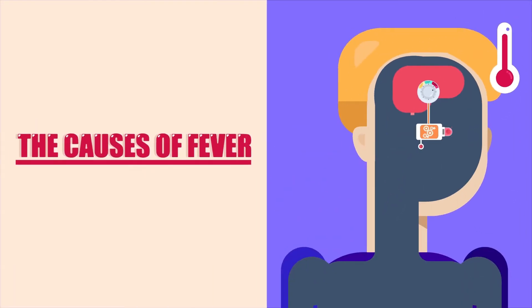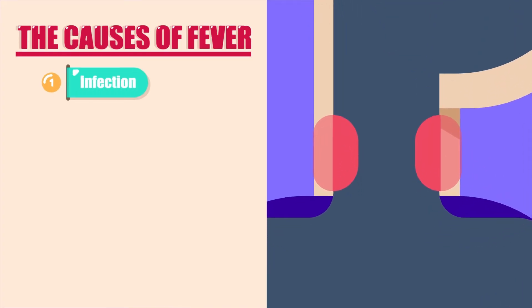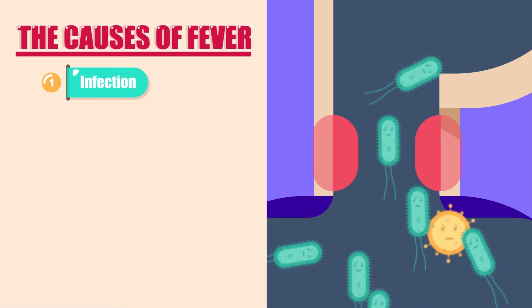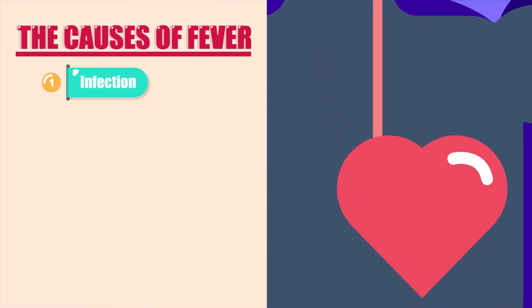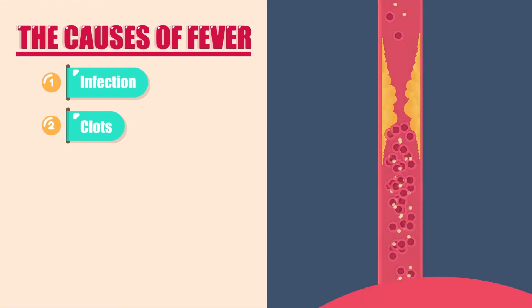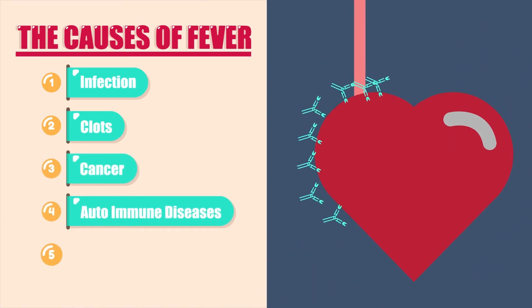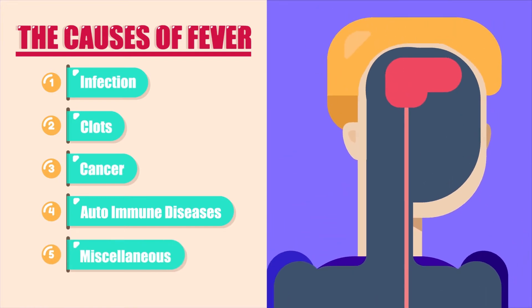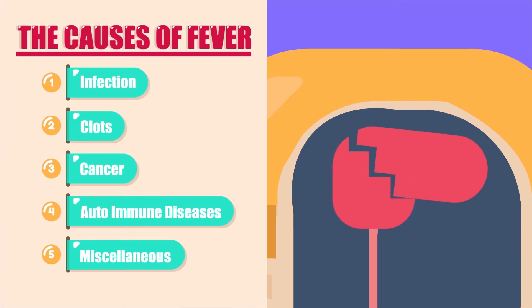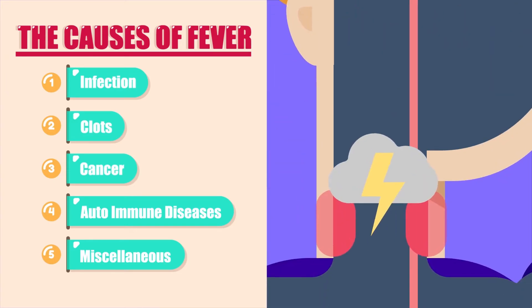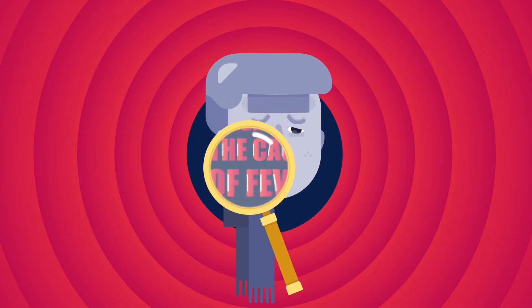The causes of fever can be divided into five broad categories: one, infections — the most common cause of pyrexia, including bacterial, viral, fungal, or parasitic infections; two, clots; three, cancers; four, autoimmune diseases; and five, miscellaneous causes which can include heat stroke, medications, brain lesions, and thyroid storm.